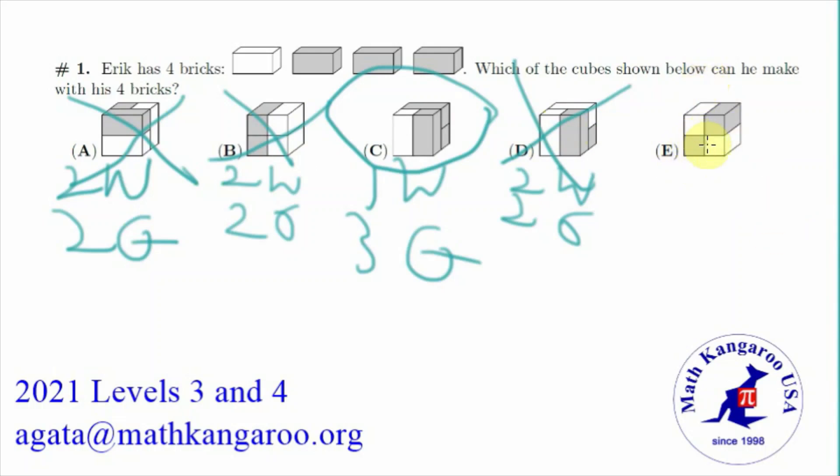And then we have E which is the exact same one as A, B, and D. And it has the same problem. So 2 white and 2 grey. So our answer is C.